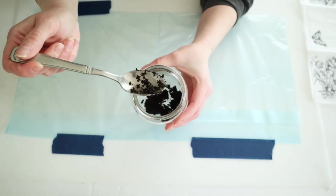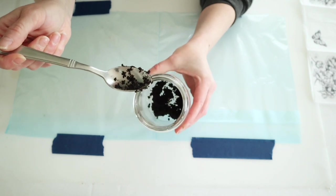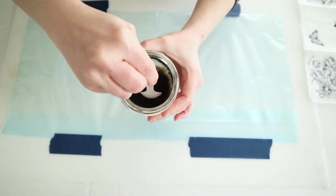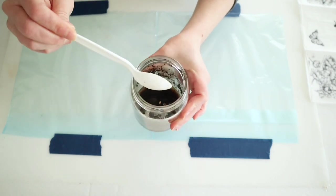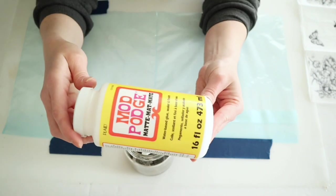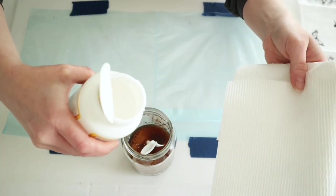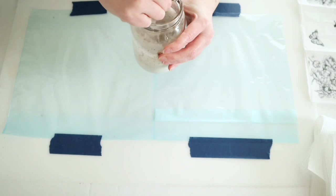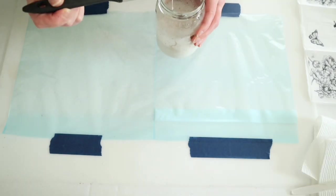I grabbed some more of those used coffee grinds, added just a tiny bit of water and mixed it up. Then I'm adding in some of my matte Mod Podge—I didn't measure it or anything, I just eyeballed how much to put in. Then I'm mixing that all up together.